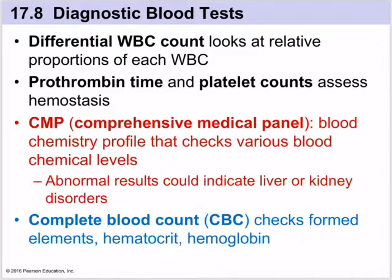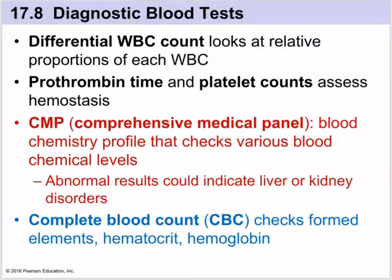Another interesting fact about blood development is that fetal blood cells form a different kind of hemoglobin than we have as adults. Hemoglobin F has a higher affinity or attraction to oxygen than adult hemoglobin, which is known as hemoglobin A. So fetal hemoglobin is going to have a stronger attraction to oxygen than an adult hemoglobin molecule would have.